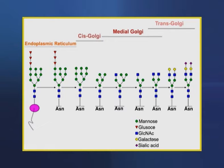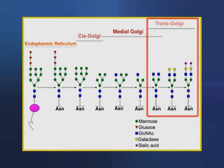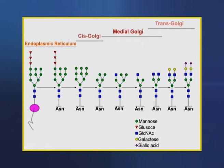The carbohydrate units of glycoproteins targeted to the lumen of lysosomes are further modified. In the medial Golgi compartments of some cells, two more mannose residues are removed and two N-acetyl glucosamine residues and a fucose residue are added. Finally, in the trans-Golgi, another N-acetyl glucosamine residue can be added, followed by galactose and sialic acid to form a complex oligosaccharide unit.